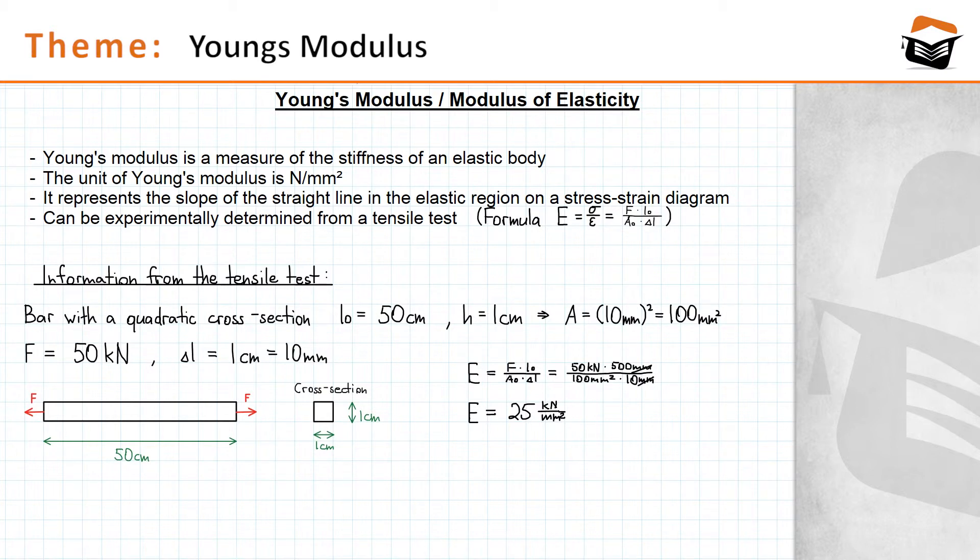And that corresponds to Young's modulus of concrete. At this point, let me tell you something useful about Young's modulus. First, there is another way to interpret the value of Young's modulus. In our case, the value is 25 kilonewton per square millimeter, and you could interpret it as the stress that is required to achieve a strain of 1.0.